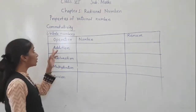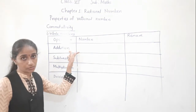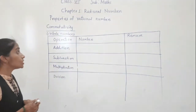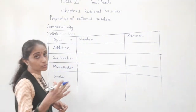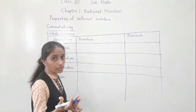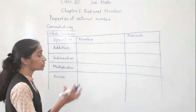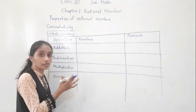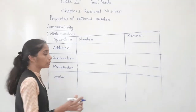In commutative property, for addition: suppose a plus b is equal to b plus a. This is what this property shows — even if you change the order, the answer remains the same.